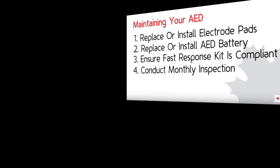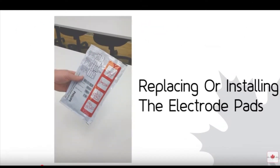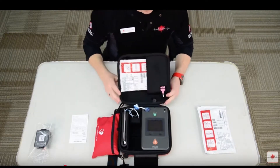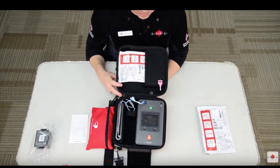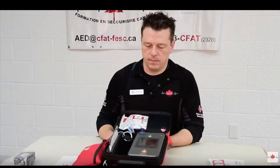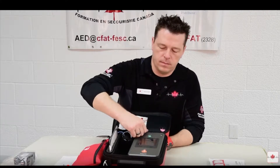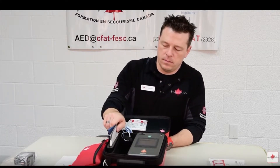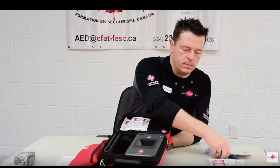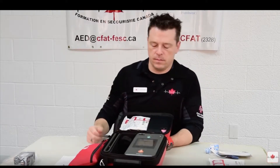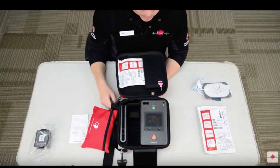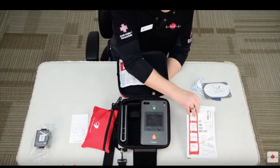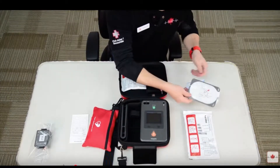Let's start with replacing the electrode pads. Open the hard case and undo the latch. Next, unplug the electrode pads from the top left of the AED and place the expired pads to the side. Once this is done, it's time to open the new set of electrode pads. Check the expiry dates on the aluminum packaging.